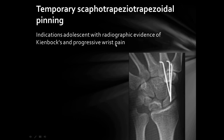Temporary scapho-trapezio-trapezoidal pinning is indicated in adolescents with ulnar negative variance and evidence of Kienböck's disease with progressive wrist pain. The scaphoid, trapezium, and trapezoid are pinned but not the lunate, so that by fusing these three bones the micro-motion of the lunate is reduced.